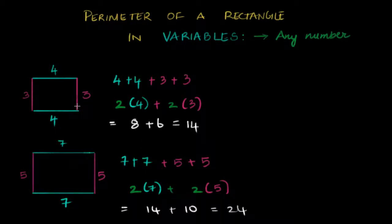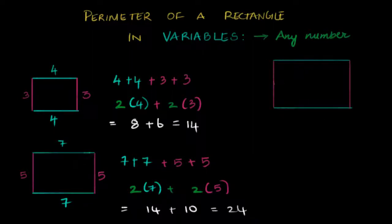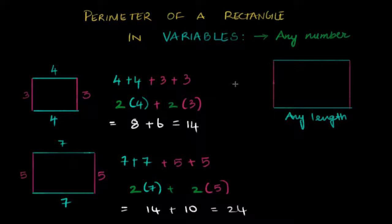Now what I notice when I do this is that my brain is shouting: you don't have to tell me what this length is. Whatever length you give me — any length — it doesn't matter. I just have to add this length twice, because this length is there and this length is there. And then I have to add the breadth twice — any breadth — I just have to add that also twice. Two times length plus two times breadth.